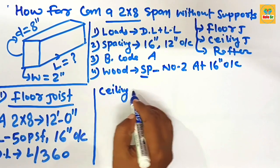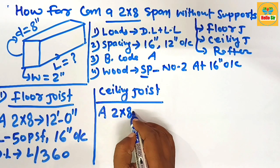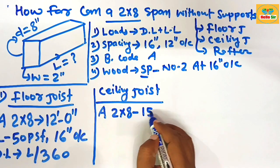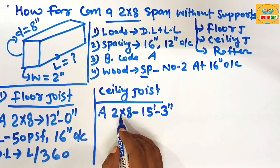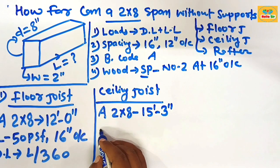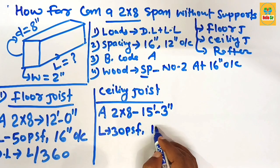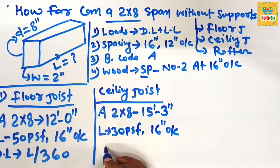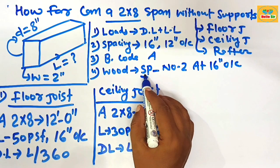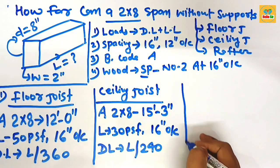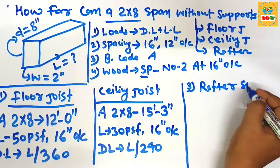Second, the ceiling joist span: a 2 by 8 dimensional lumber as a ceiling joist can span a maximum distance of 15 feet 3 inches. The conditions are a load of 30 pounds per square foot, spacing of 16 inches on center, a deflection limit of L/240, and southern pine number two grade wood species.